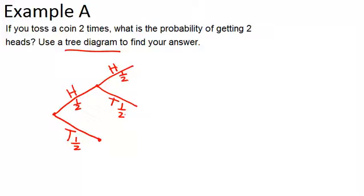Similarly, if we got tails to start out with we could get heads or tails for our second toss. And the probabilities are one half and one half. And now we are done with the tree diagram because we've organized all that could happen when you flip a coin two times.